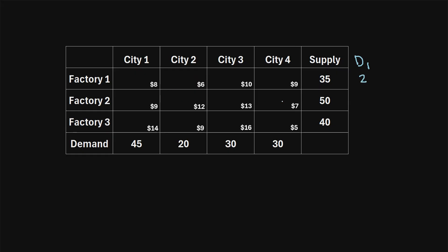We repeat this process in the second row. The lowest shipping cost is seven dollars and the second lowest is nine dollars, so the difference is two. In the last row, the lowest shipping cost is five dollars and the second lowest is nine dollars, so the difference is four.